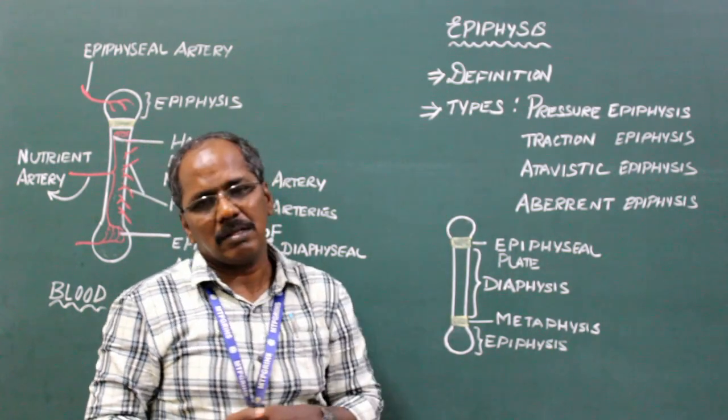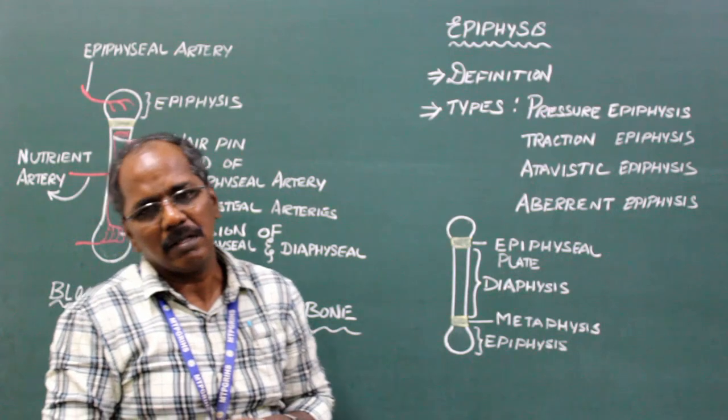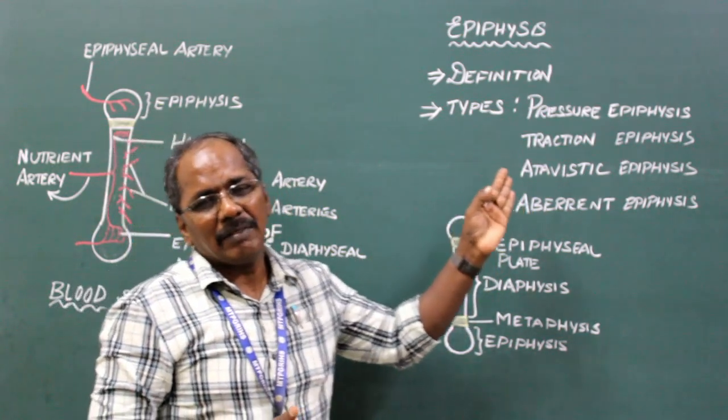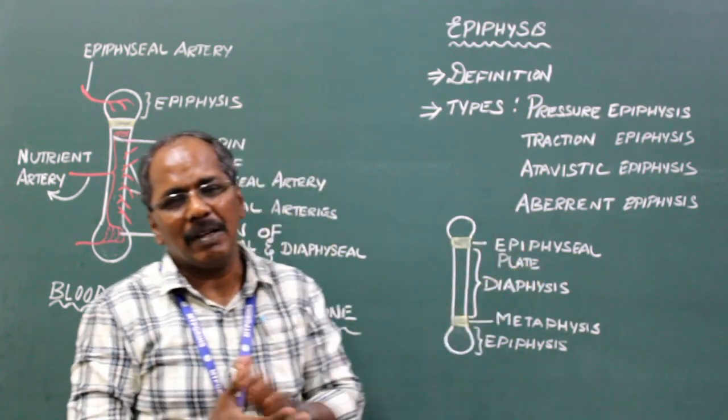Types of Epiphysis. There are four types of Epiphysis: Pressure Epiphysis, Traction Epiphysis, Atavistic Epiphysis, and Aberrant Epiphysis.